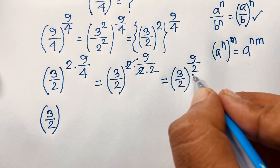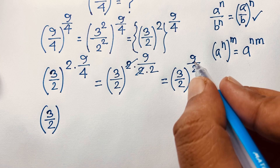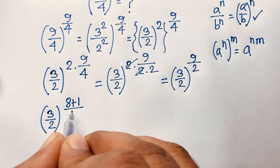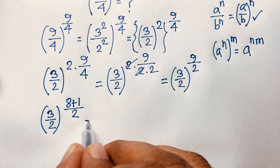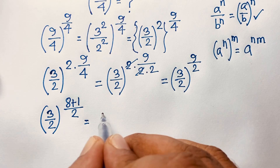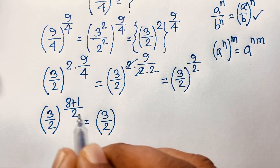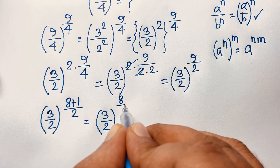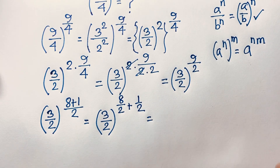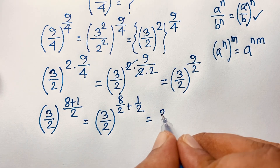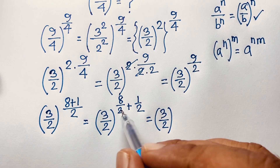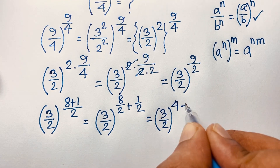Now (3/2) whole to the power 9/2. Note that 9 equals 8 plus 1, so 9/2 equals 8/2 + 1/2. Separating this exponent, we get (3/2) to the power (8/2 + 1/2). Since 8 divided by 2 is 4, this becomes (3/2) to the power 4 plus 1/2.